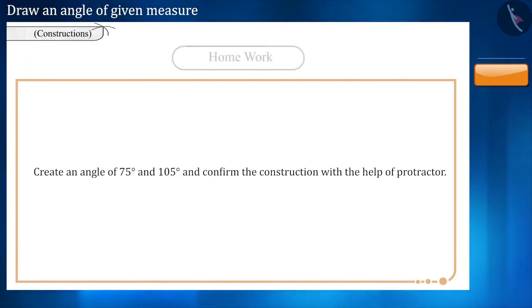Before leaving, take some questions as homework and try to solve them. Construct an angle of 75 and 105 degrees and check the construction with the help of protractor. Here you do not need to give mathematical solution. After the construction, measure it with the protractor to see whether it is correct or not.